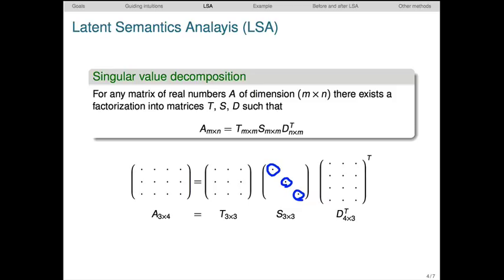LSA is often called truncated SVD. We don't, of course, want to simply rebuild the original matrix as we've done here. Rather, we want to just consider the product of S and T, or the product of just S and the transpose of T. And we typically do it only with some initial slice of these two, that's the truncation step.